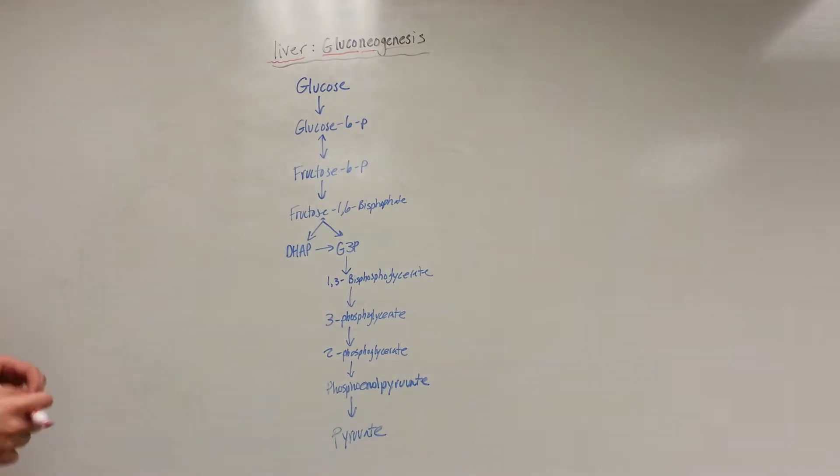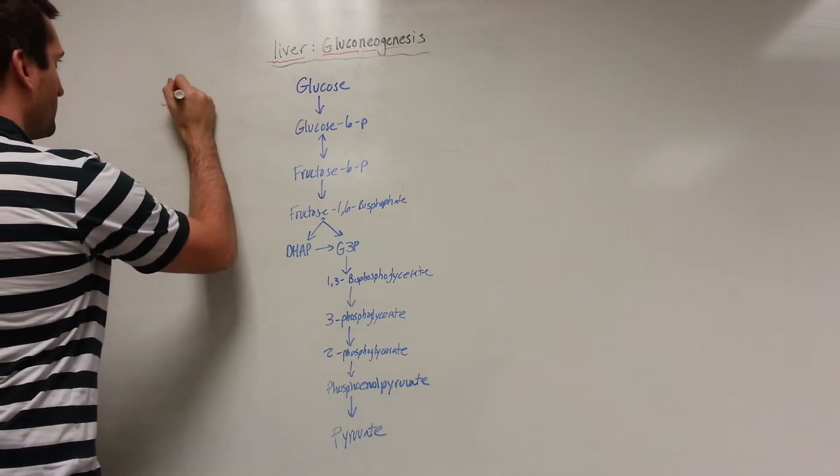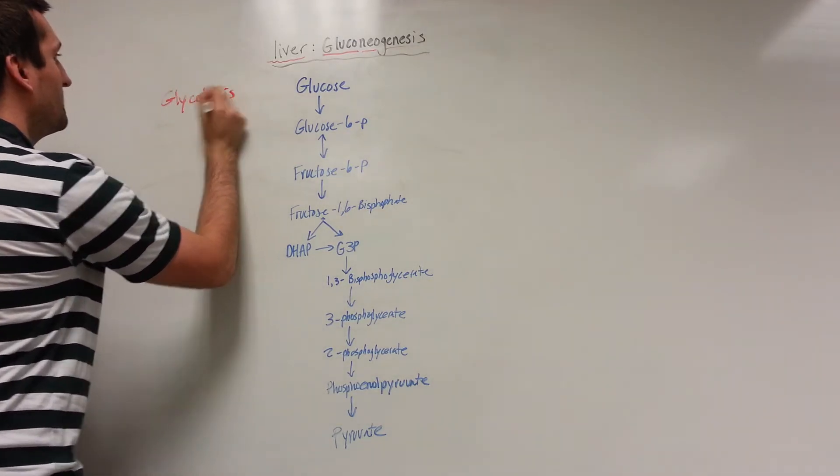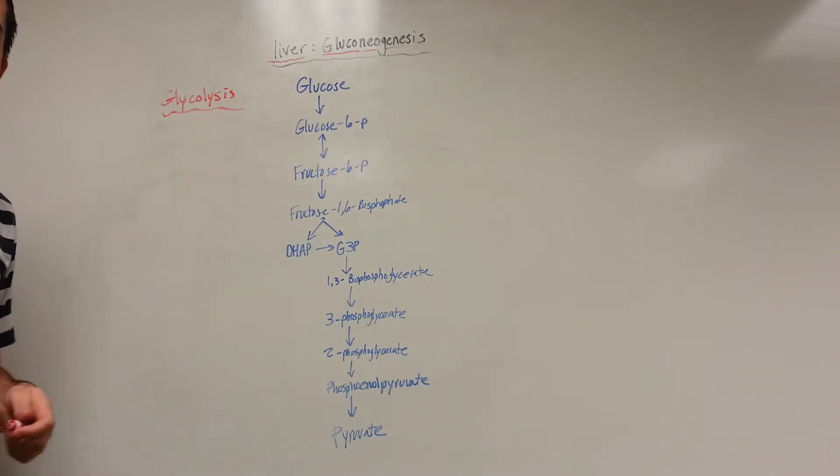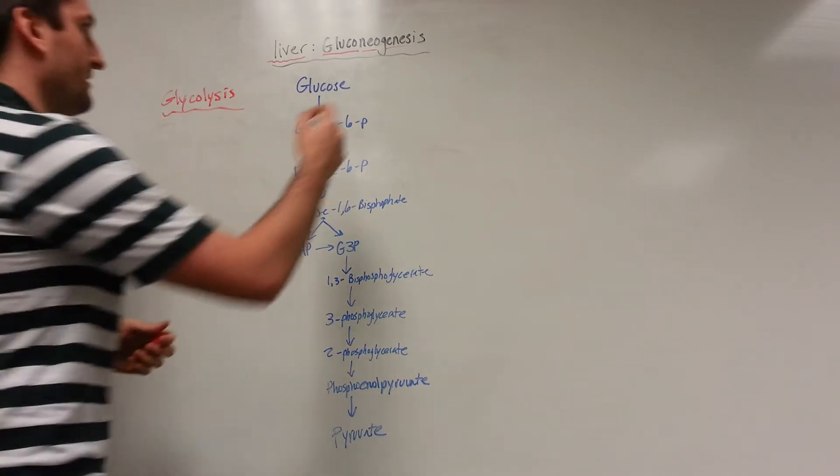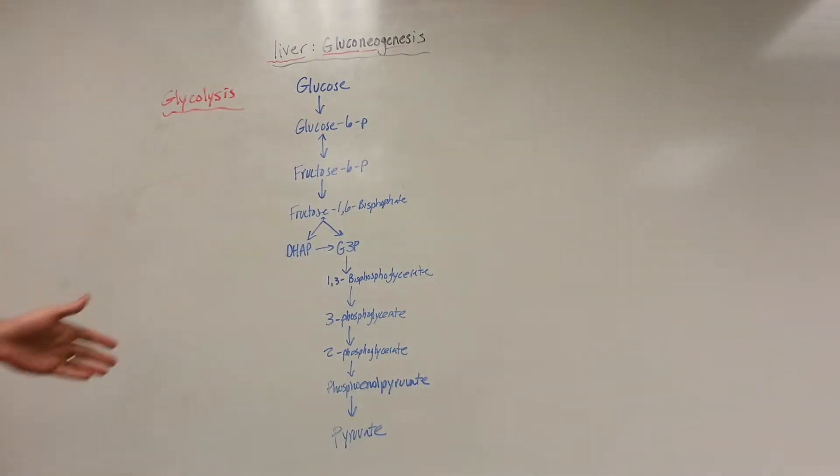We're talking about glucose, neo is new, and genesis - we're going to generate new glucose. So this is in the hypoglycemic state. We're going to start by looking at this pathway you've already seen before. This is simply the glycolysis pathway, where we convert glucose to its final product of two pyruvate molecules.